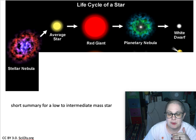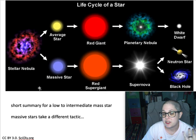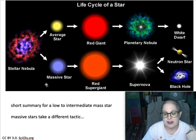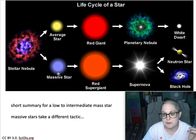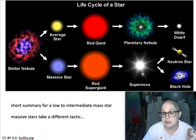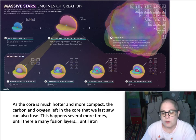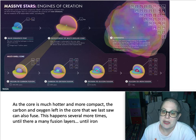Now let's look at what happens to a massive star — a star that is greater than eight solar masses, eight times the mass of the sun when it's on the main sequence. That's going to be a hot, whitish-bluish star. It's also going to go through giant phases — super giant usually — and then it's going to explode.